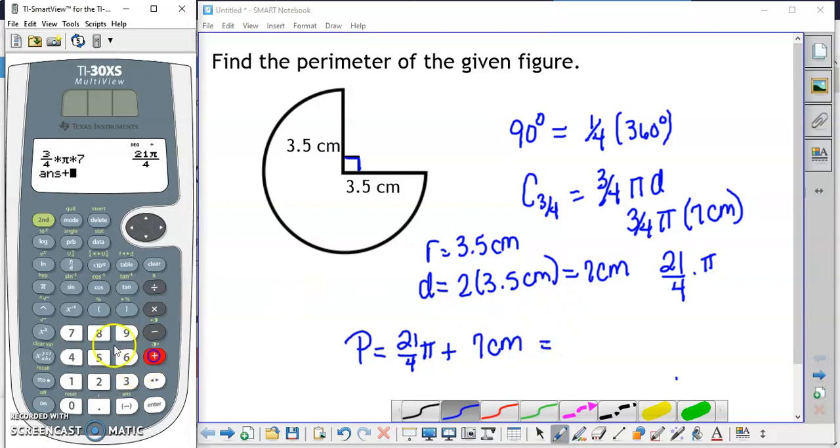So I'm going to add 7 centimeters. And I'm going to get 23 centimeters rounded to the nearest centimeter.